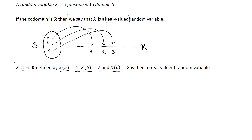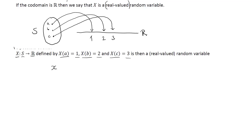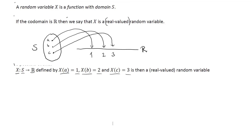There is nothing random about a random variable — it is a completely deterministic function. The randomness takes place when nature picks an outcome from the sample space. It is also true that the random variable is not a variable but a function. So weirdly enough, a random variable is neither random nor a variable. The reason it's called a random variable is simply that we can call the outcome small x, which can take the value 1, 2, or 3 — a variable whose value we don't know until the experiment has been performed.